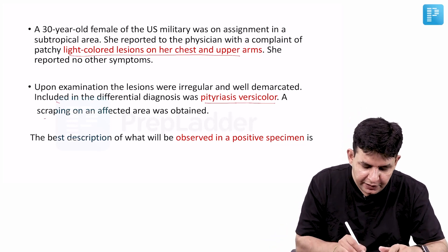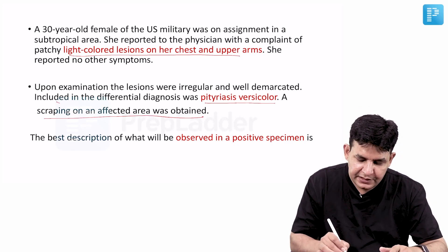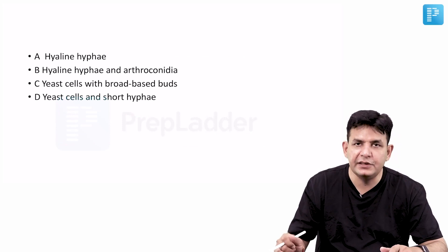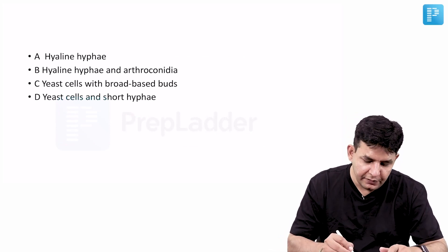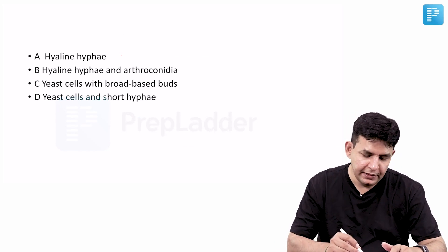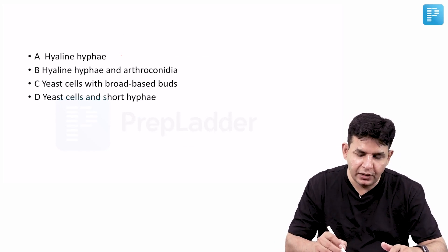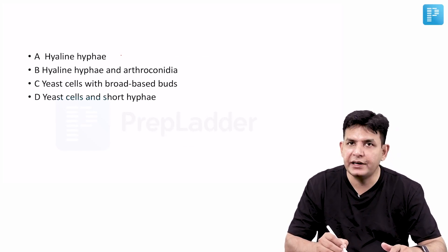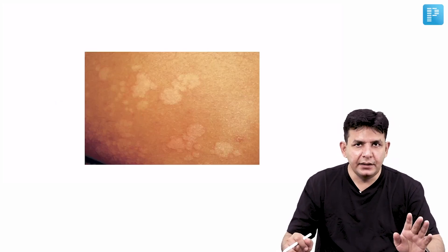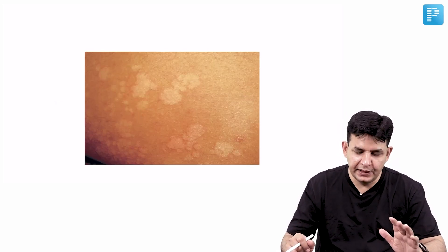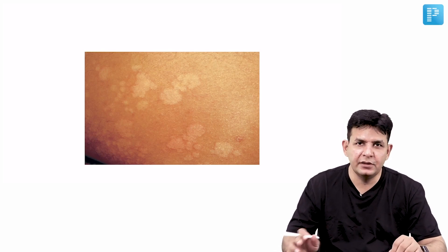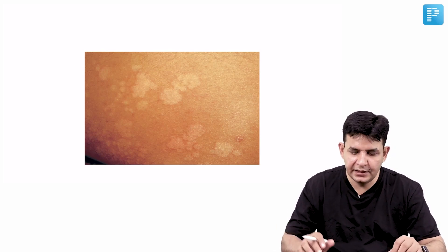A scraping of an affected area was obtained. The question asks for the best description of what will be observed in a positive specimen. Options include: hyaline hyphae; hyaline hyphae and arthroconidia; yeast cells with broad-based buds; or yeast cells with short hyphae. This is our typical picture of Pityriasis versicolor, caused by Malassezia furfur or Malassezia globosa as per the skin faculties.